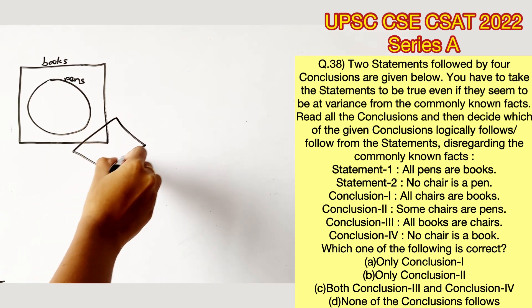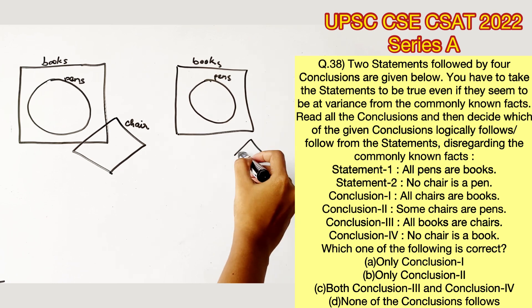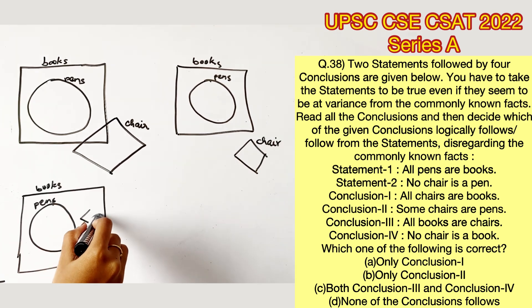This is one possibility. This can be one possibility, and this can be one possibility. If you notice in all these, no chair is a pen.